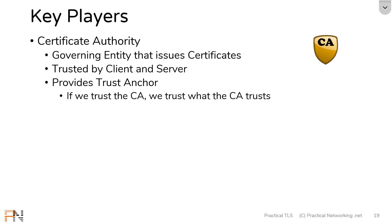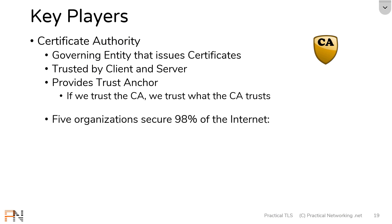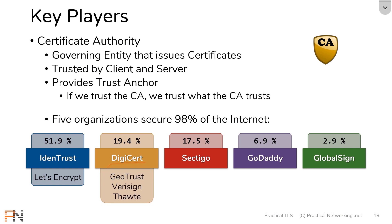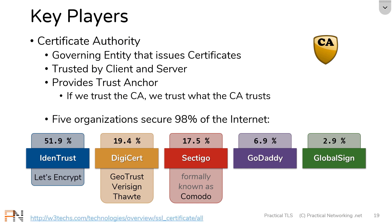As of today, five organizations secure 98% of the internet. Here are those five organizations and the percentages of certificates that have been signed by each. This chunk also includes certificates signed by Let's Encrypt. DigiCert is a company that owns other CAs — GeoTrust, FairSign, and Thawte. Sectigo, which some may not have heard of, is actually Comodo rebranded. Either way, these five organizations secure 98% of the websites out there. If these stats interest you, you can explore them in more detail at the website shown.